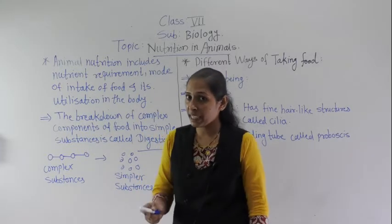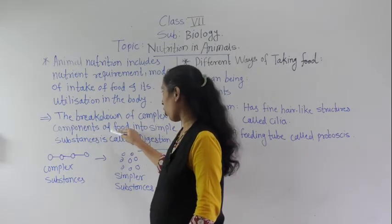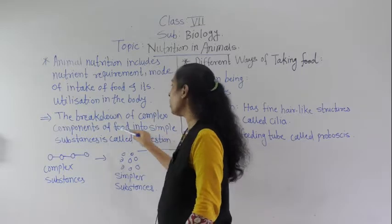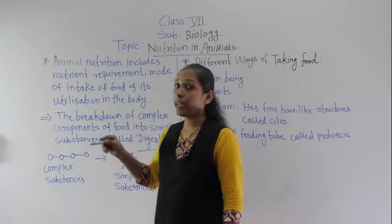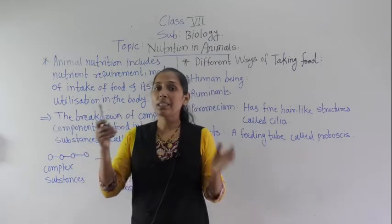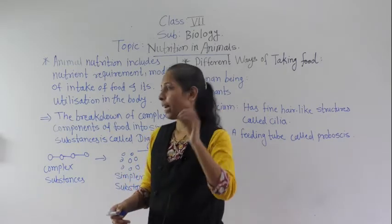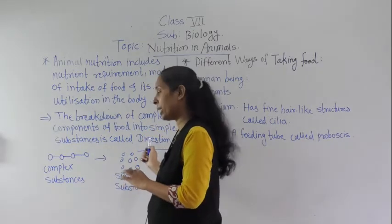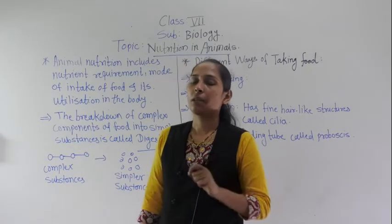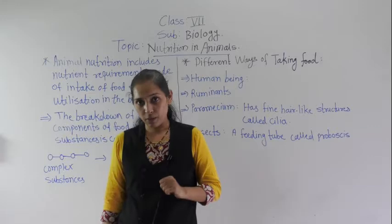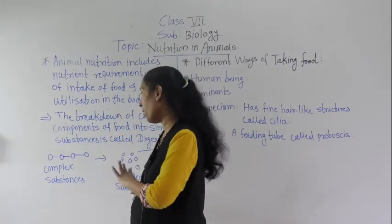The process of converting complex carbohydrates into simpler substances is called digestion. So the breakdown of complex components of food into simpler substances is called digestion. Carbohydrate is the complex component that our body cannot utilize, and that is why the body must convert it into a simpler form.